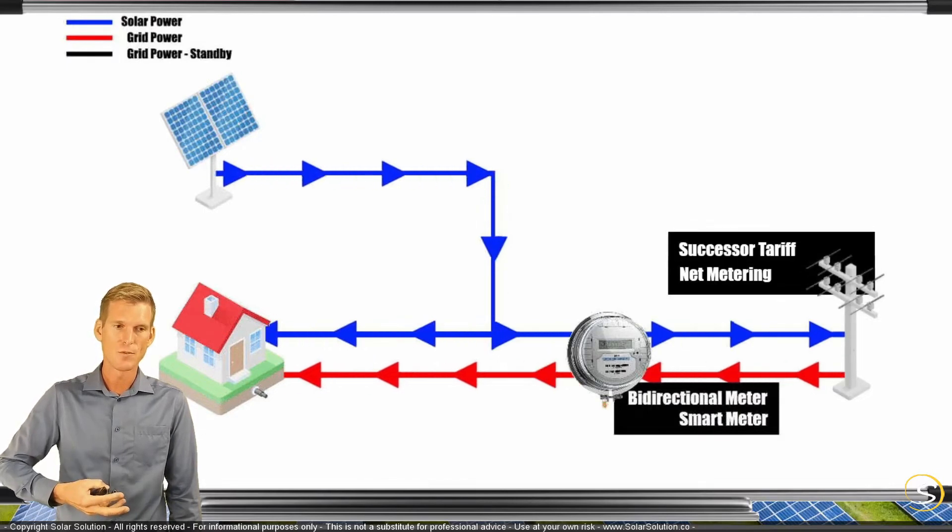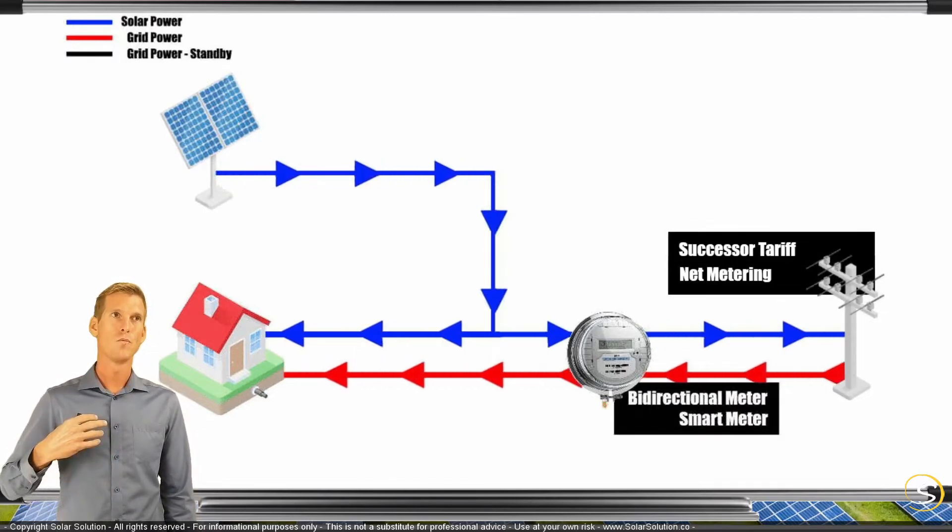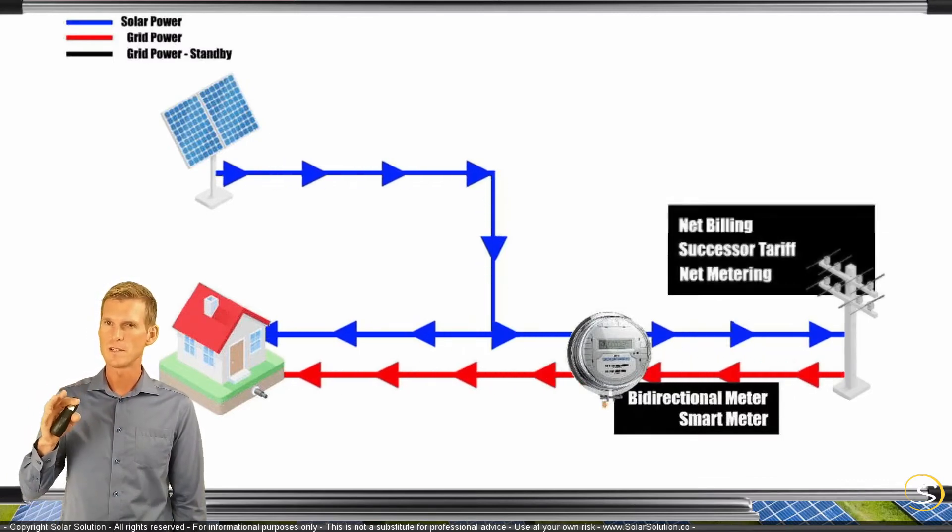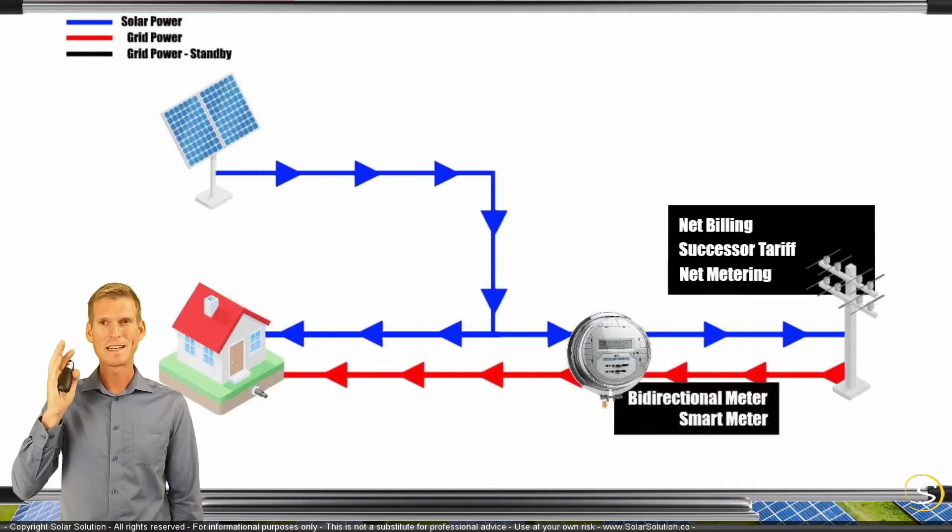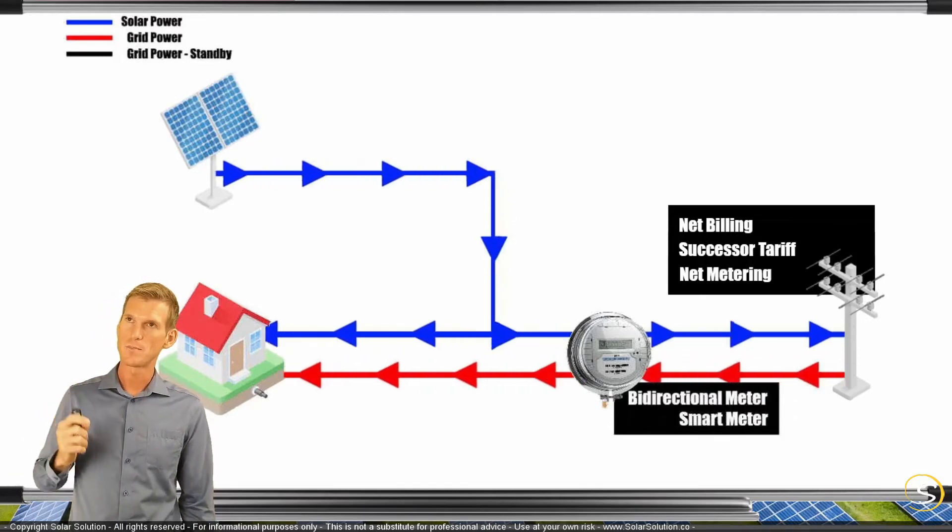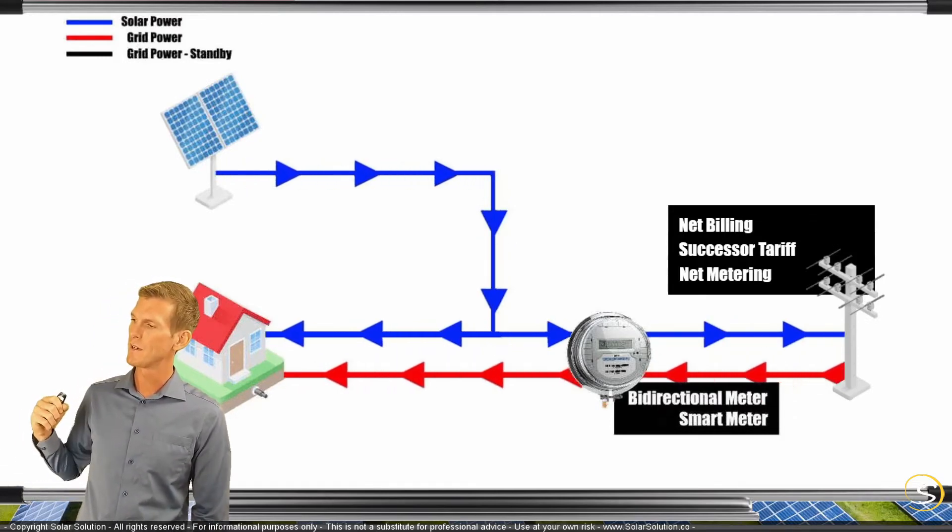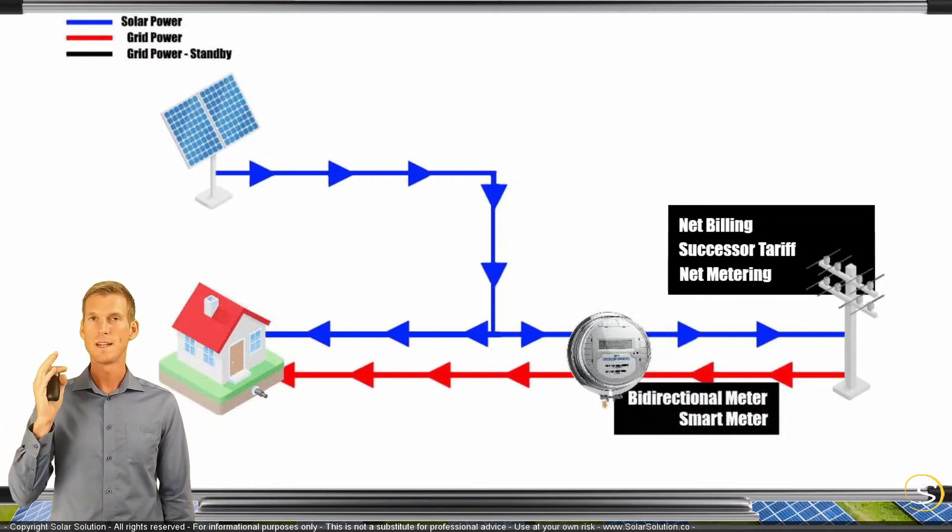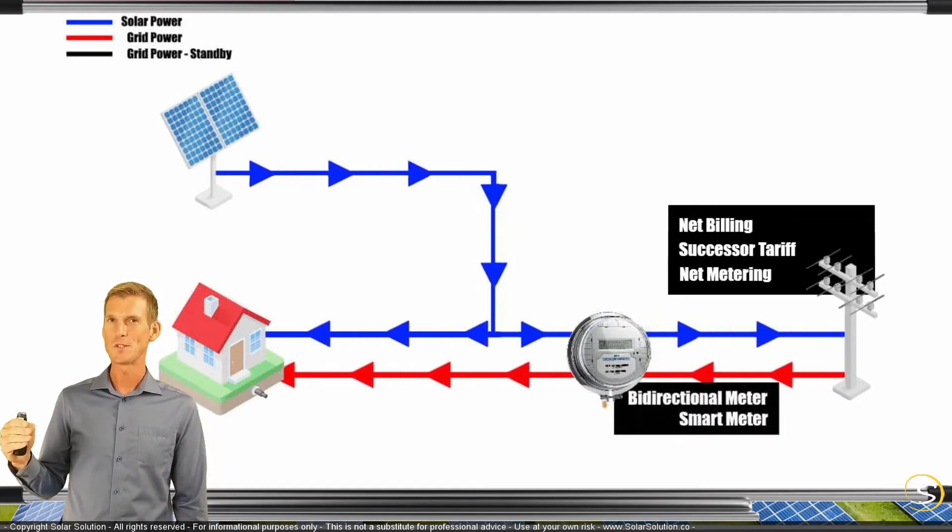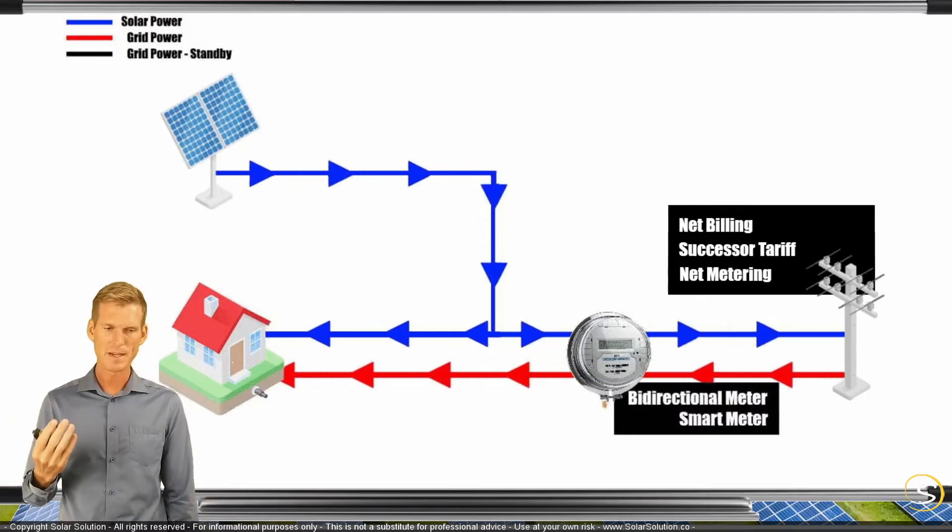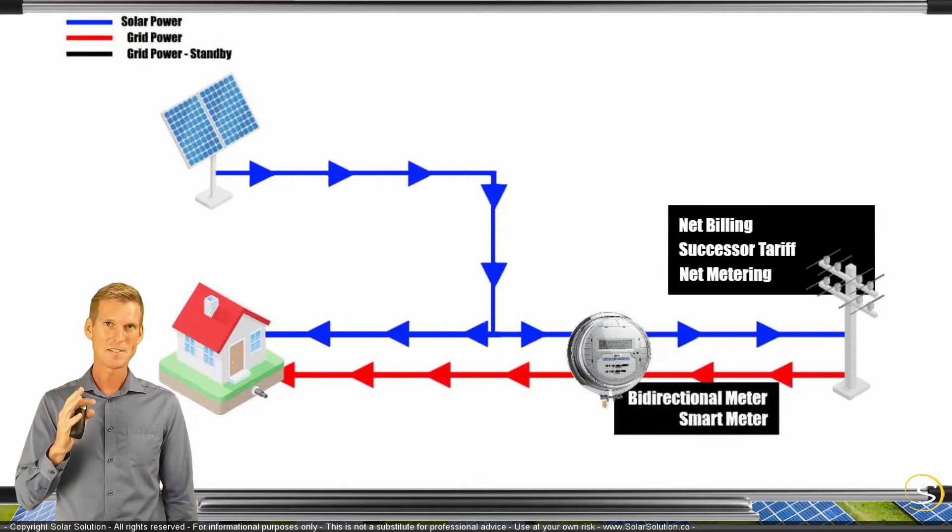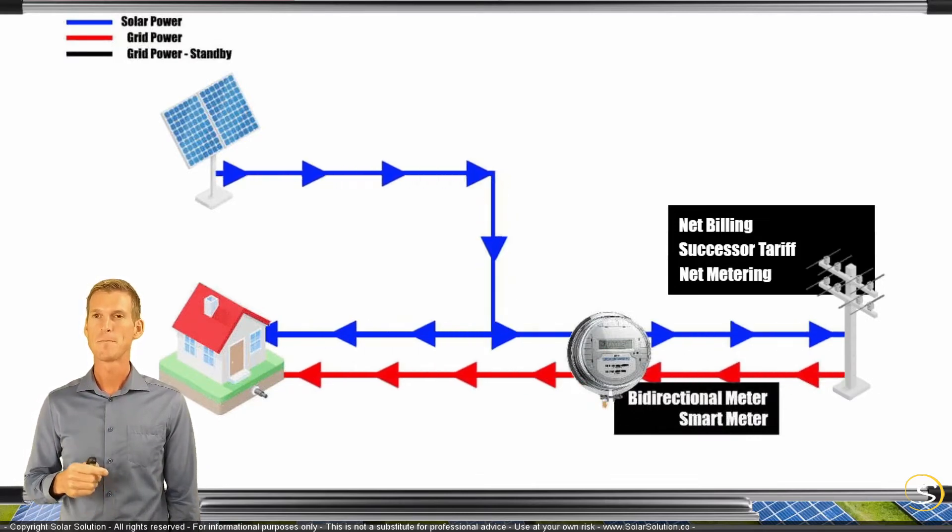Successor tariff is a very general term and depends on local conditions because they have all different kinds of structures. Net billing is one of these successor tariffs, which sounds a lot like net metering but is substantially different. With net metering, you get the same energy price for what you're taking out as what you're feeding in. With net billing, they have a certain rate for what you're taking out and a different, almost always lower rate for what you're feeding in.